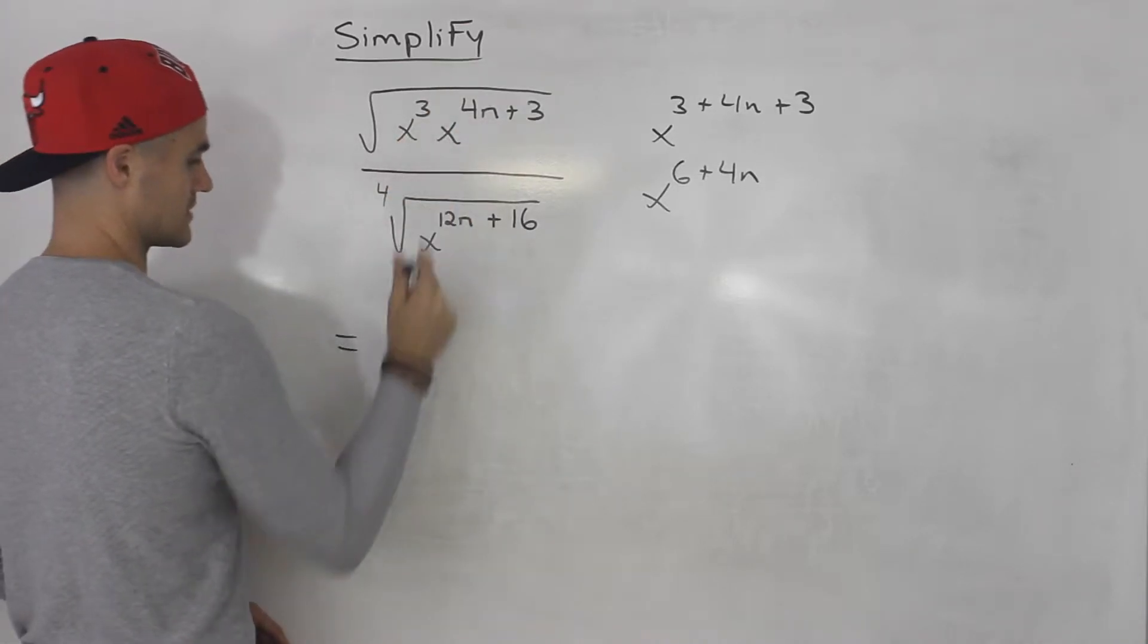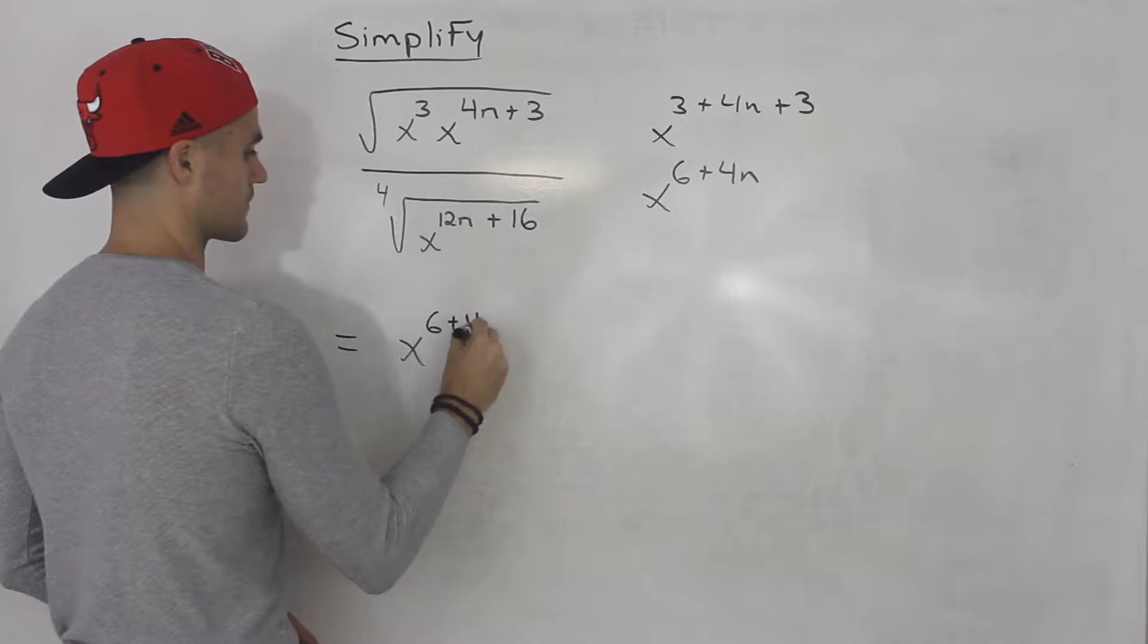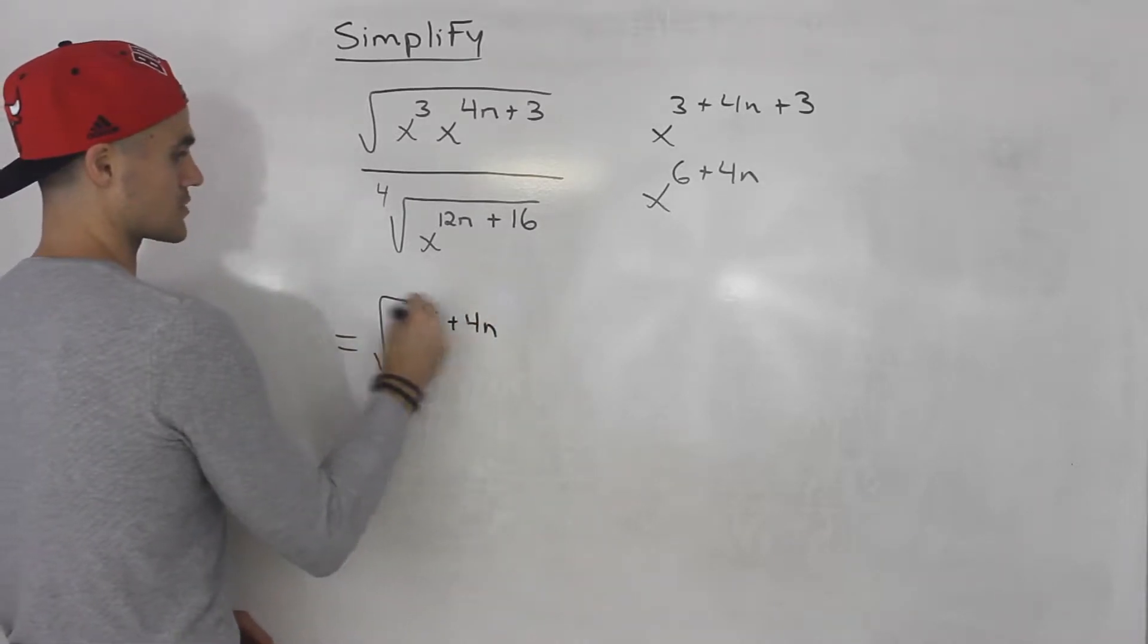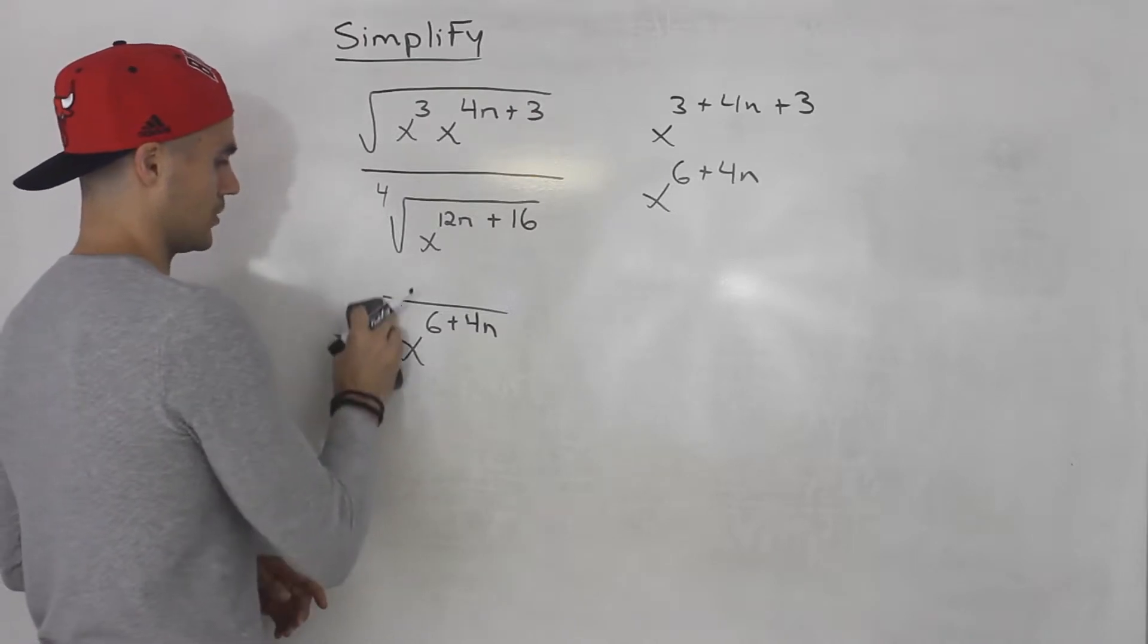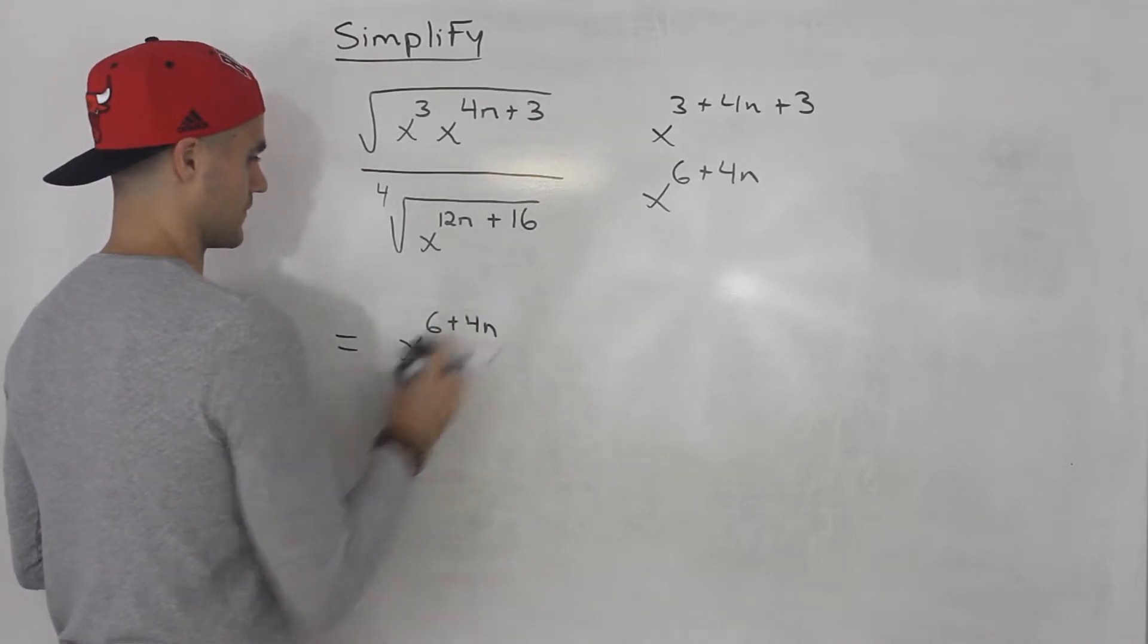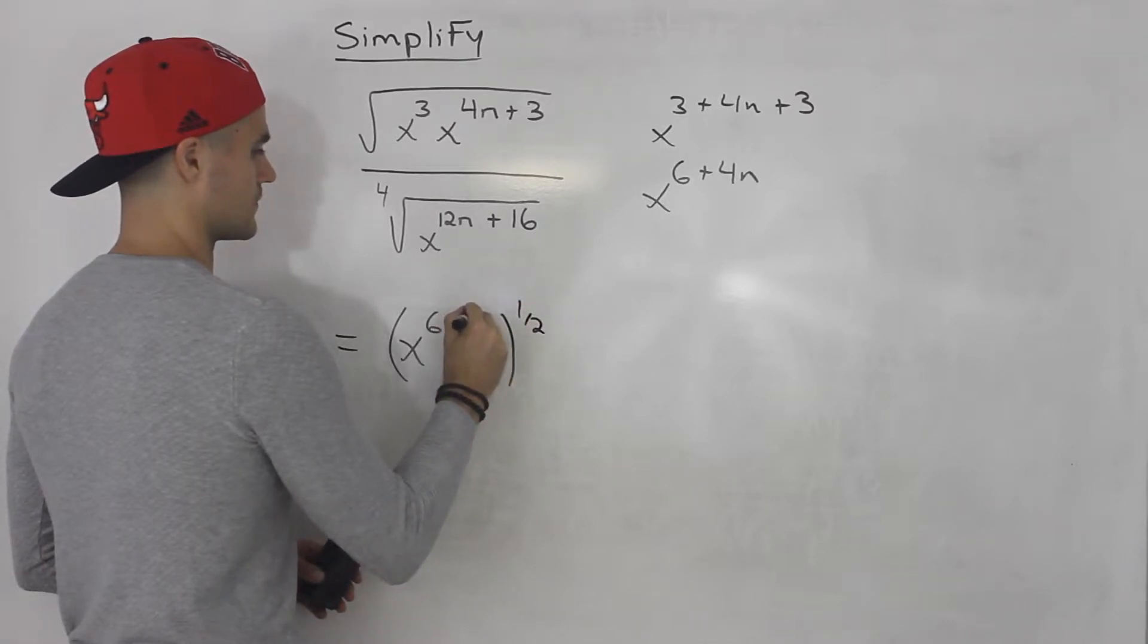So that simplifies to x to the power of 6 plus 4n and that's going to be all square rooted. But instead of writing the square root I'm going to put a rational exponent of 1 over 2 like that.